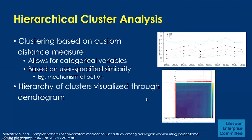I'll briefly mention hierarchical clustering analysis. This is an approach based on a custom distance measure, and what's unique is that it can allow categorical variables to be plotted as trajectories over time. The user specifies the similarity measure — an example would be mechanism of action for studying medications. The hierarchy of clusters can be visualized through a dendrogram, and there's an example in the literature.